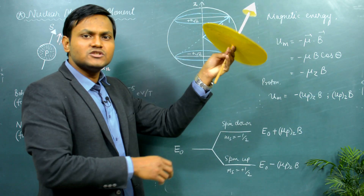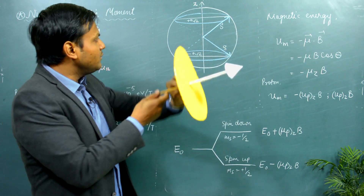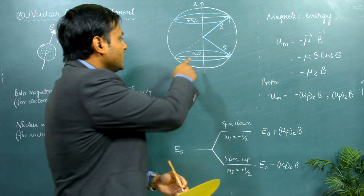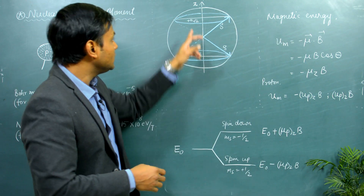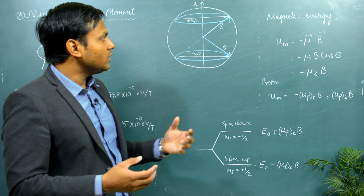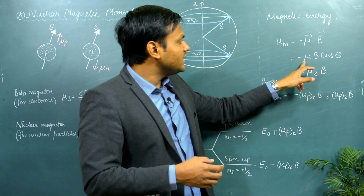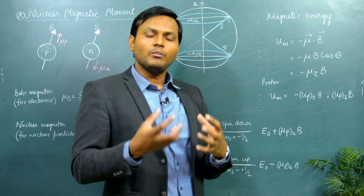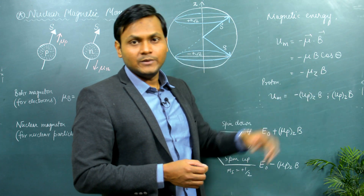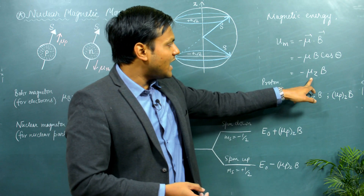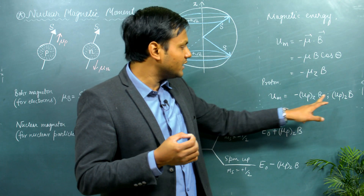According to this quantization rule, a particle can either precess in one particular conical section or the other. The energy corresponding to these two different directions is not equal, and therefore it leads to splitting of the energy levels of protons, neutrons, or electrons in the presence of an external magnetic field. If a proton has an energy E₀ and is placed in an external magnetic field, because it has a magnetic moment of its own, it can orient itself in two different directions, corresponding to spin up and spin down.